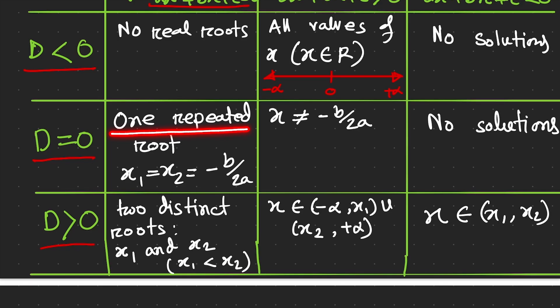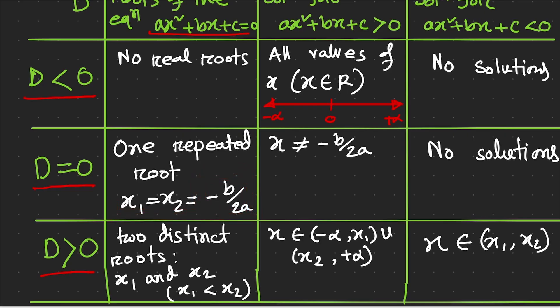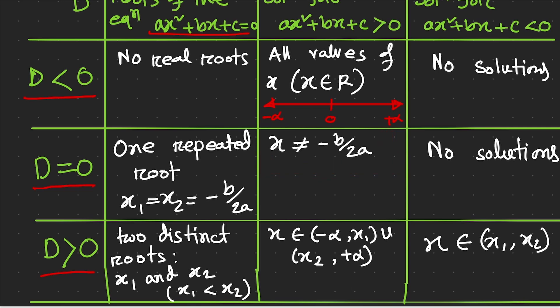Our second case is when D = 0, meaning the nature of the roots of the quadratic equation are equal — x₁ = x₂. The root can be determined by −b / 2a. The solution is all real numbers except x cannot equal −b / 2a. This is very important to predict the solutions — if there are four options, you can easily identify the correct one.